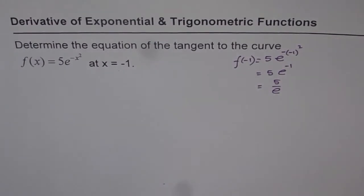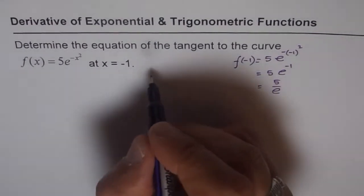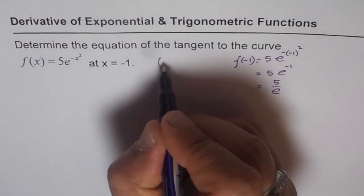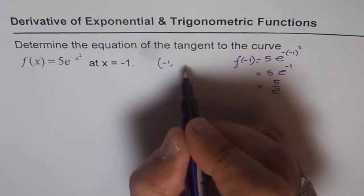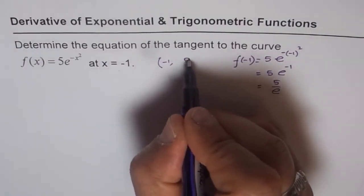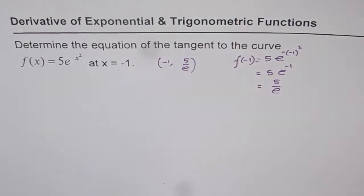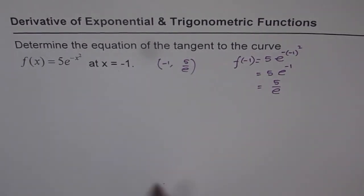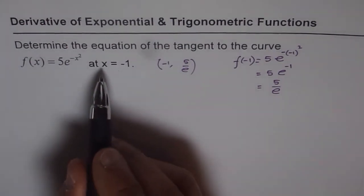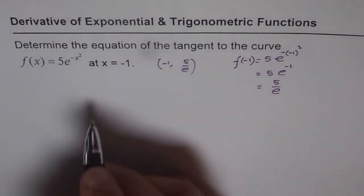We can write this as 5 over e. So that is the y value, and therefore we get a coordinate point which is (-1, 5/e). That is the point at which we need to find the tangent. Now let's find the derivative of the function at x = -1.